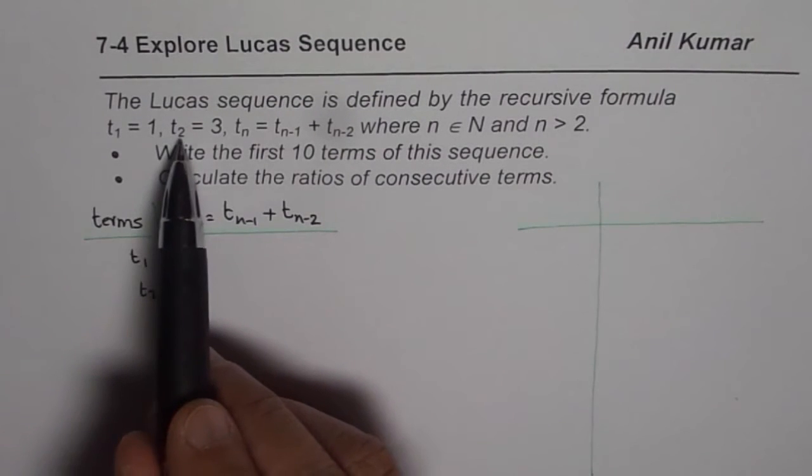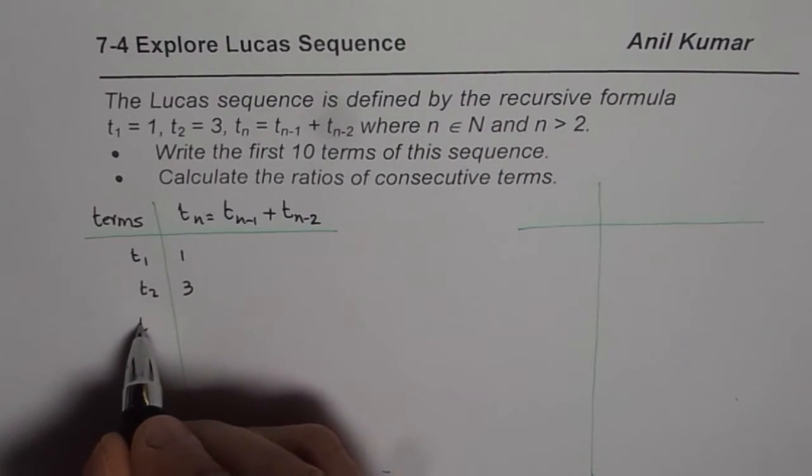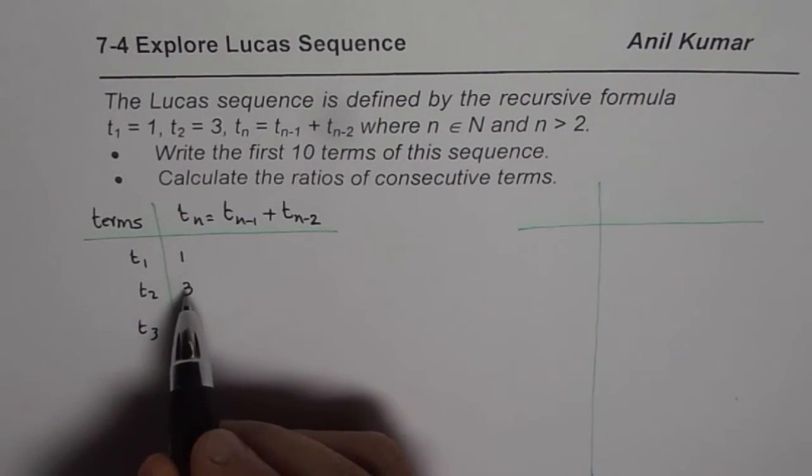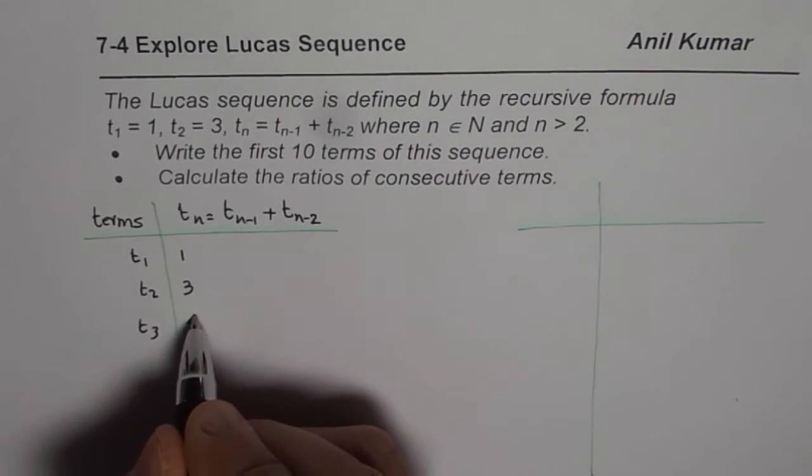t1 is 1, t2 instead of 1 it is 3. So how do you get the other terms? We get the other terms by adding previous two terms, that is what the formula is. So, 3 plus 1 is 4.